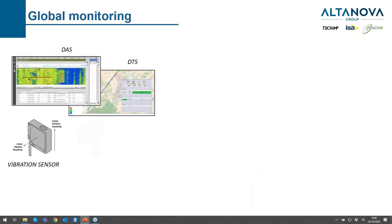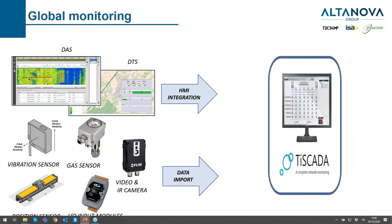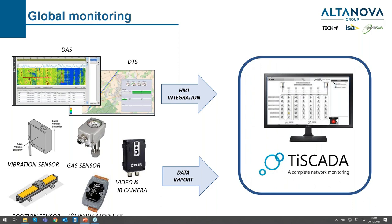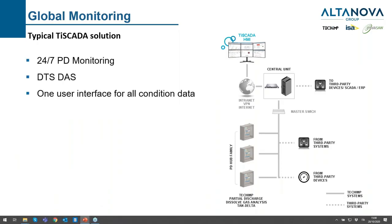Here we have an example of the HV cable global monitoring: we have DAS, DTS, vibration sensors, gas sensors, video camera, infrared, position sensors, and input modules. We can make both HMI integration and data import. Everything is in our TSCADA system. A typical example with global monitoring provides 24/7 PD monitoring, DTS and DAS — one user interface for all conditioned data on a web-based platform, so you can access it from your laptop by connecting to the same network.